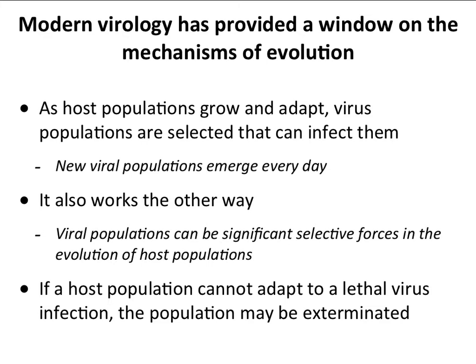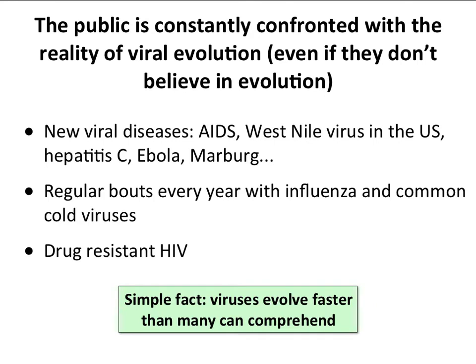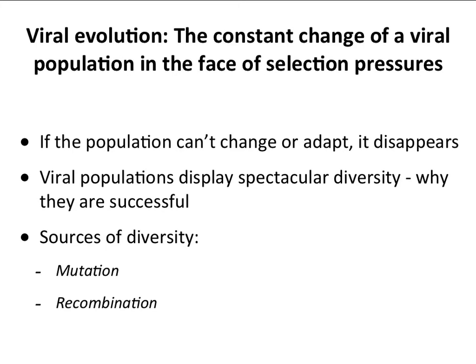Many of our concepts of evolution have come from studying viral systems. Much of the public doesn't believe in evolution, but it's right in front of our faces in the form of viruses. Every time a new virus emerges, whether it's drug-resistant HIV, influenza every year, or brand new viral diseases we've never seen before — this is evolution happening. You can't see viruses, and maybe that's part of the problem. Perhaps the speed at which they're evolving is so great that no one understands it, because evolution in other animals, such as ourselves, is so slow.